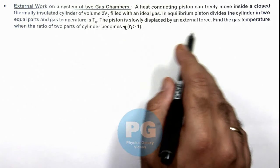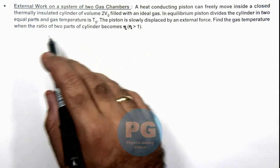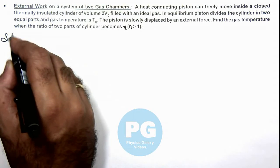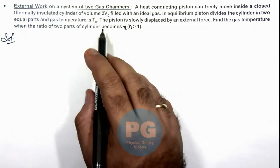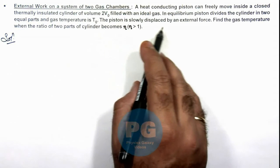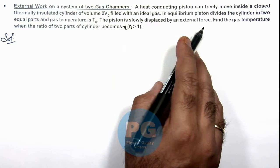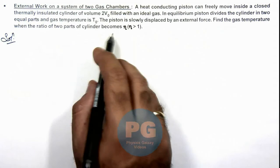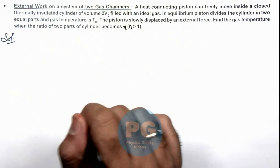In equilibrium, the piston divides the cylinder into equal parts and gas temperature is T₀. The piston is slowly displaced by an external force. We are required to find the gas temperature when the ratio of two parts of cylinder becomes η, which is greater than 1.